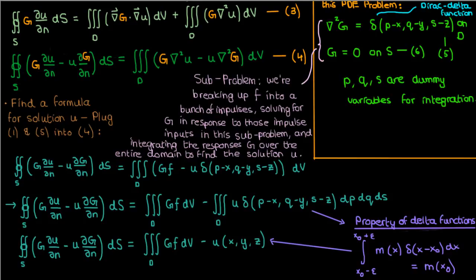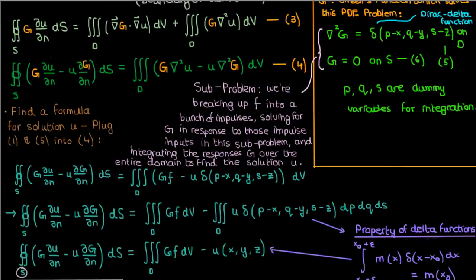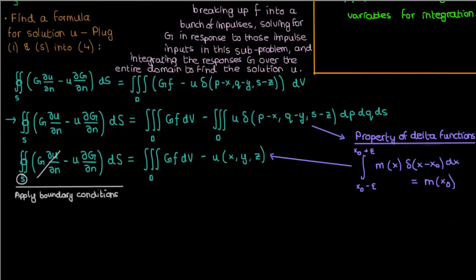Now the surface integral term on the left corresponds to an integration over only the boundary capital S, which means that the u and g we're using in that integral only correspond to the functions u and capital G at the boundary capital S. So for this double integral, we'll apply our boundary conditions. We know that at the boundary capital S, g is 0, so this first term cancels.